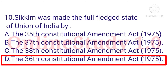Question number 10: Sikkim was made a full-fledged state of the Union of India by which constitutional amendment? The answer is option A: the 36th Constitutional Amendment Act, 1975, by which Sikkim was made a full-fledged state of the Union of India.